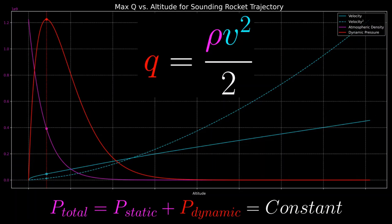The following is a plot from a sounding rocket trajectory that illustrates the relationships between atmospheric density, velocity, velocity squared, and dynamic pressure with respect to altitude along this trajectory.